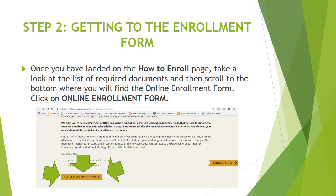Step number two is getting to the enrollment form. Once you have landed on the how-to-enroll page, take a look at the list of required documents and scroll to the bottom where you will find the online enrollment form. Click on Online Enrollment Form.